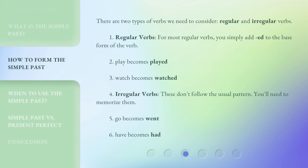There are two types of verbs we need to consider. For most regular verbs, you simply add "-ed" to the base form of the verb — for example, 'play' becomes 'played,' and 'watch' becomes 'watched.' Irregular verbs don't follow the usual pattern, so you'll need to memorize them — for example, 'go' becomes 'went,' and 'have' becomes 'had.'